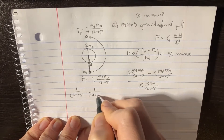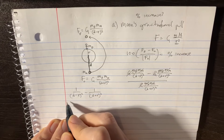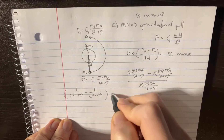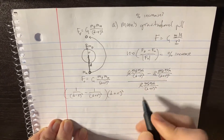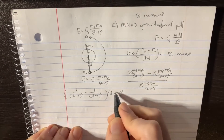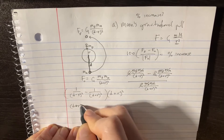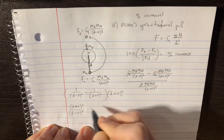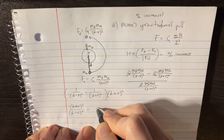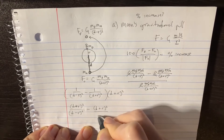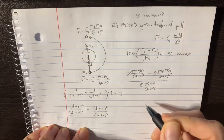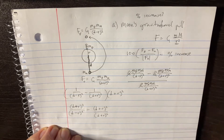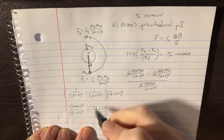We have one over (D minus R) squared minus one over (D plus R) squared, and this is divided by one over (D plus R) squared. Multiplying through by (D plus R) squared gives us (D plus R) squared over (D minus R) squared, minus (D plus R) squared over (D plus R) squared — and this last term simplifies to one.